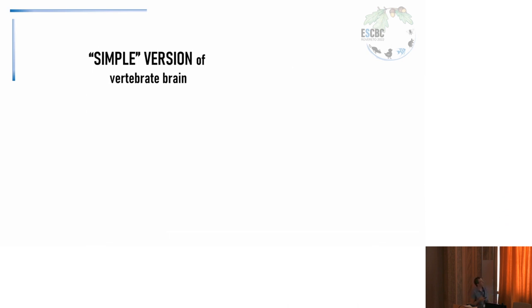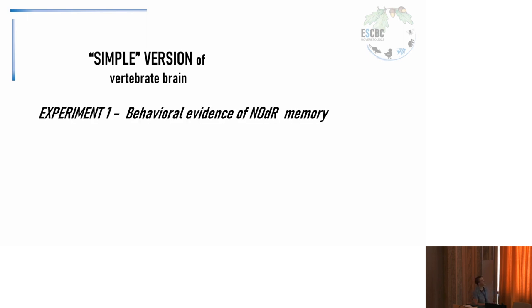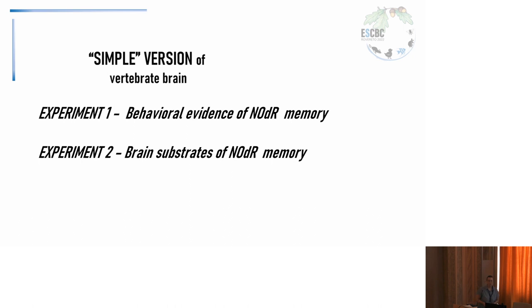To do so, we performed two experiments. For the first, we wanted to assess the presence of recognition memory for olfactory cues, and also identify the brain substrates involved in this type of memory. We borrowed some scents that are usually used with murine models — in my case: almond, banana, d-limonene, and almond.